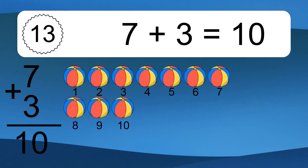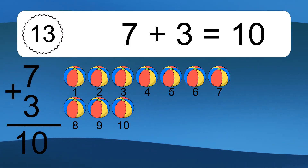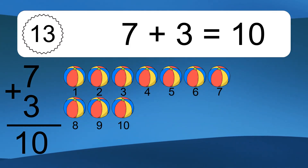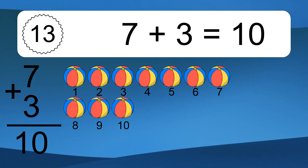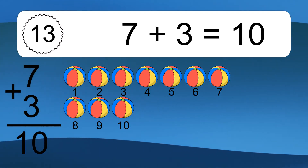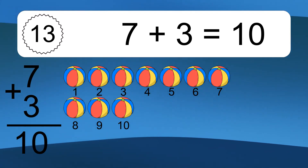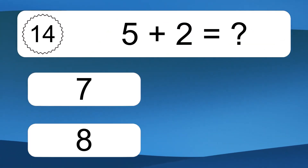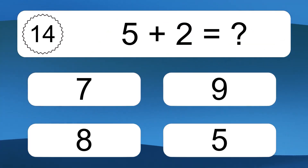7 plus 3 equals 10. Let's count it. 1, 2, 3, 4, 5, 6, 7, 8, 9, 10.